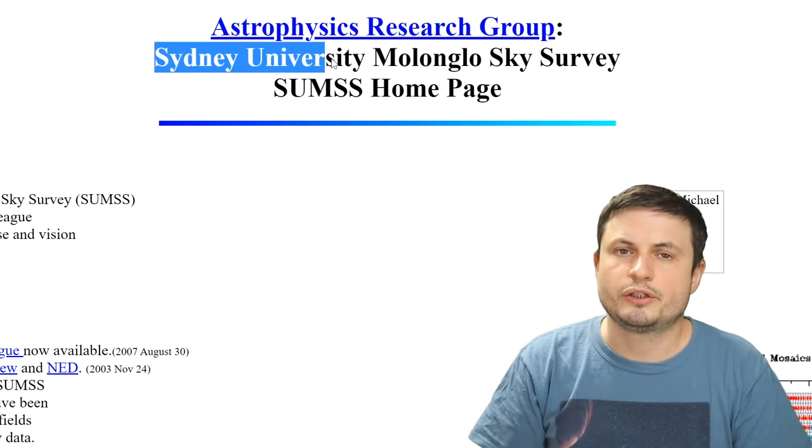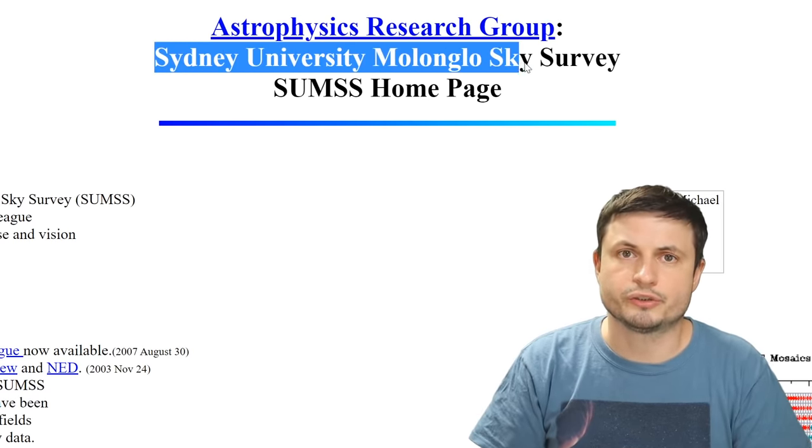This was the Sydney University's Molonglo sky survey, which allowed us to essentially create a radio map of the southern skies. In the process, it also discovered a lot of previously invisible galaxies and a lot of other things that have since been analyzed and re-analyzed many times.